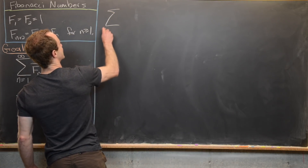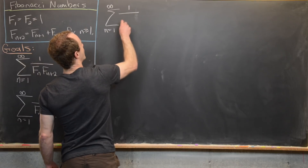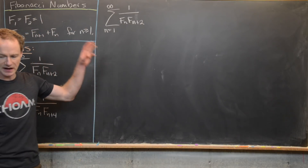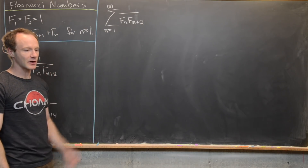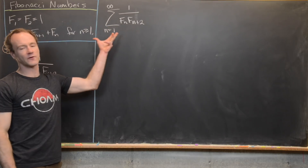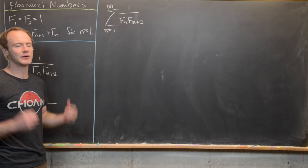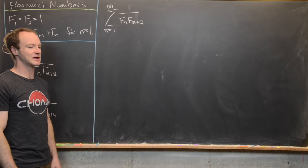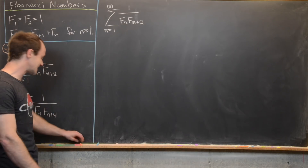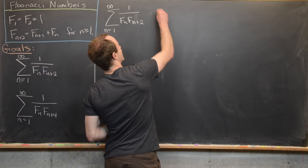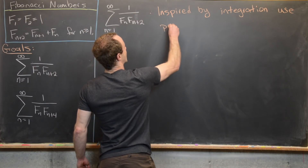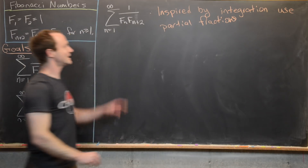Let's first look at the sum from n=1 to infinity of 1 over f_n · f_{n+2}. Remember that taking a sum is a lot like taking an integral. If you were to integrate 1 over a product of two functions, you'd likely use the method of partial fraction decomposition. So that's exactly what we're going to do here — taking inspiration from integration and using partial fractions.